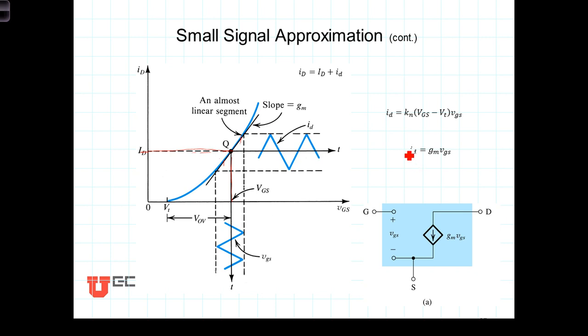We're working towards developing a small signal circuit model for the MOSFET amplifier. Here's the beginning of it. The drain current, lowercase I sub D, equals G sub M, this transconductance quantity, times VGS. The beginning of our model has the gate, source, and drain. The voltage from gate to source in this small signal model will be VGS, and the current I sub D is modeled as a dependent current source where the current is dependent upon this voltage VGS.